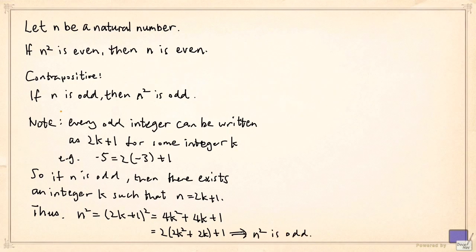And that completes the proof. So we have proved that if n is odd, then n squared is odd. But since this is the contrapositive of the original statement, we have proved the original statement. And this is an example of an indirect proof.